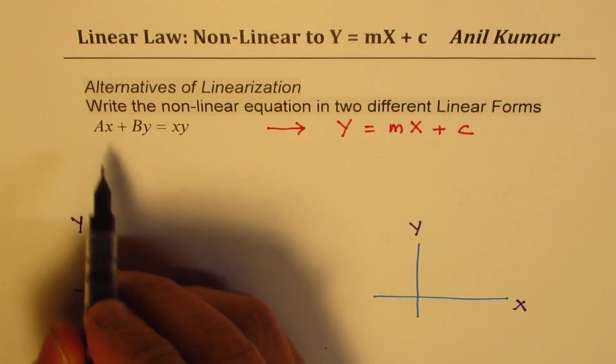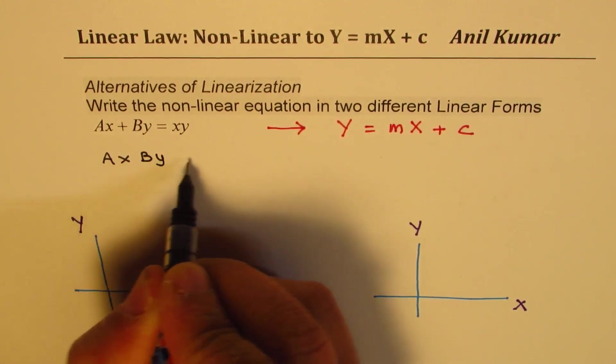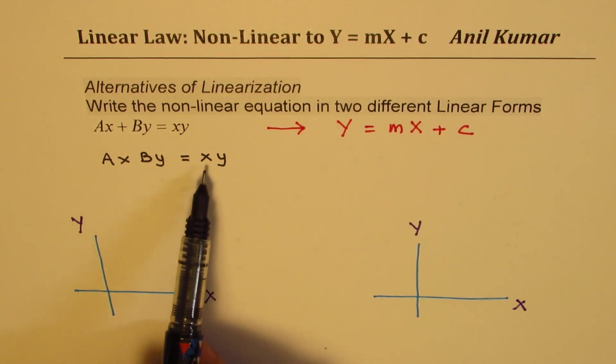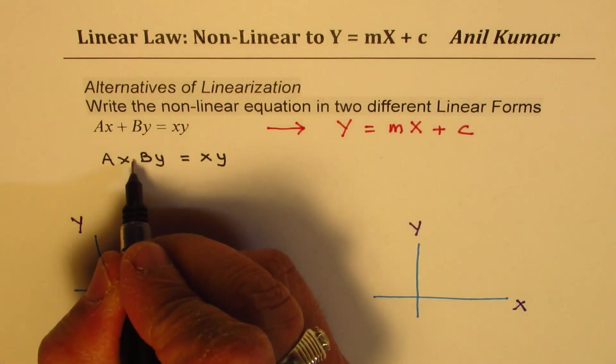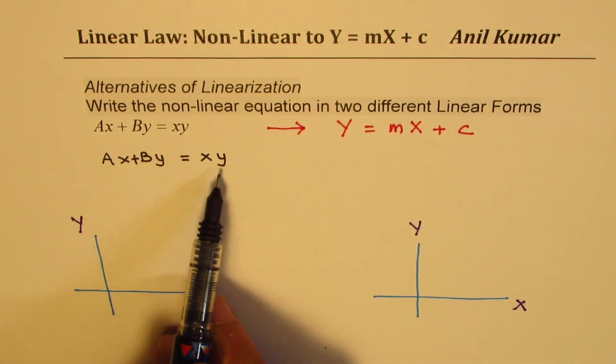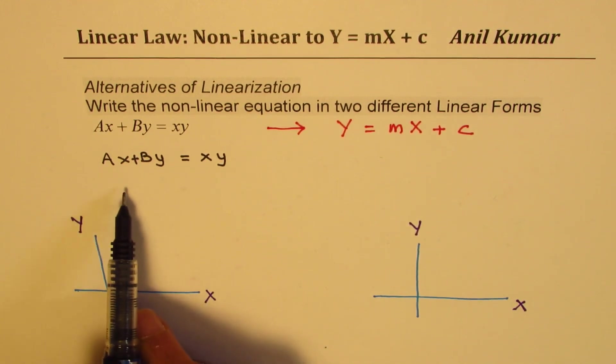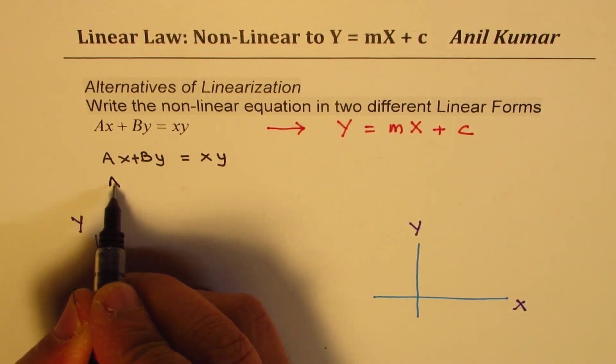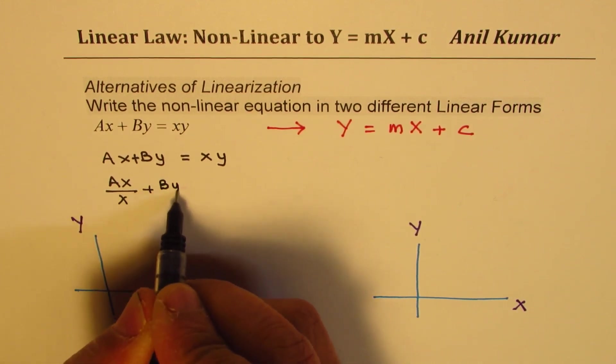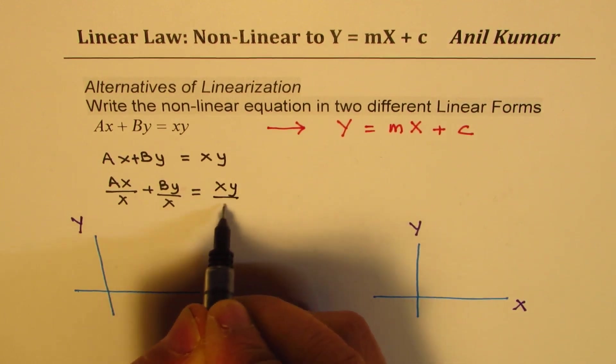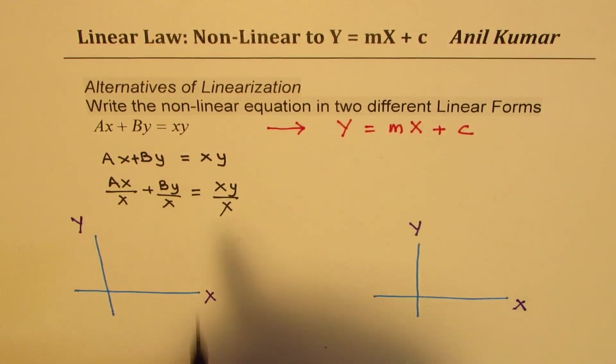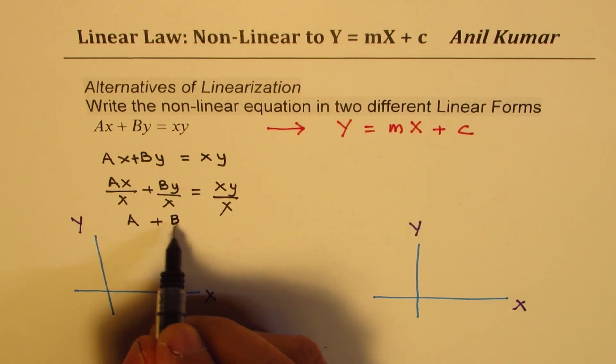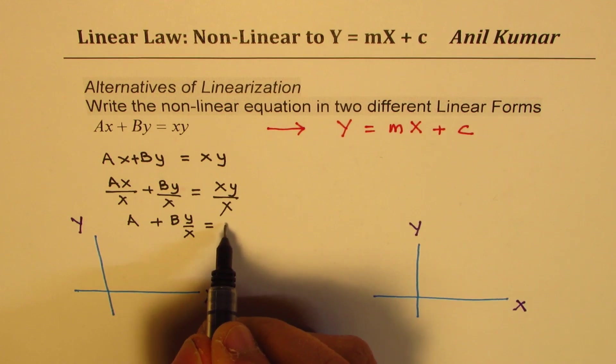So let's work with this equation which is AX plus BY equals XY. Now to convert that into this form, it could be very easy if I just divide by let's say X. If I just divide by X, I could write this equation with Y and X over Y. So let me just divide by X. So what we get here is AX over X plus BY over X equals XY over X. These X's cancel and what I get here is A plus BY over X equals lowercase y.